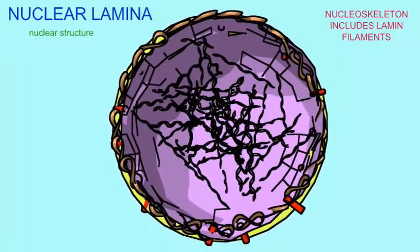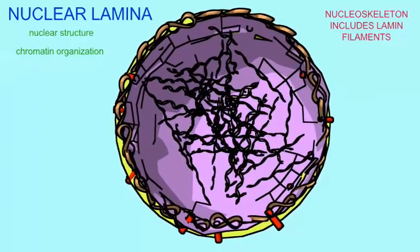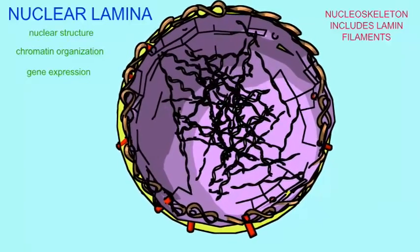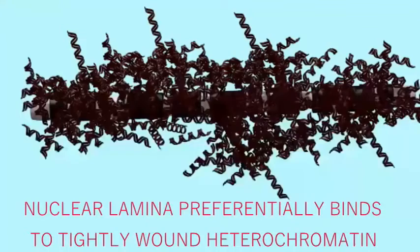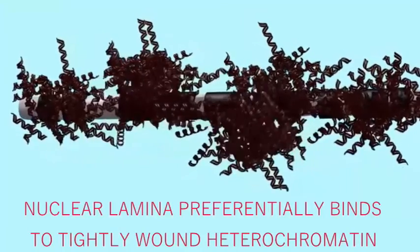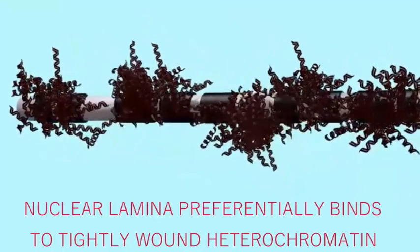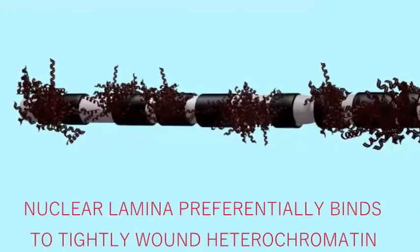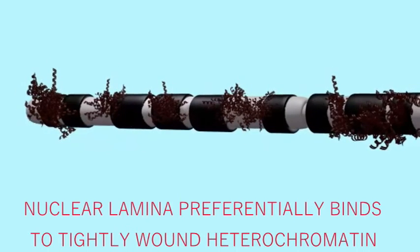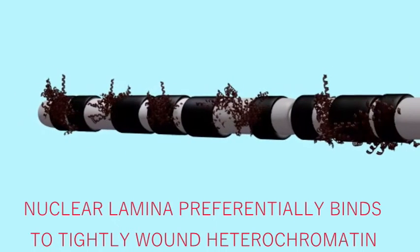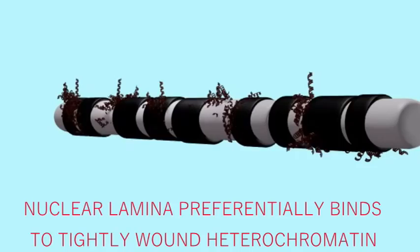These proteins interact with the DNA of chromatin. These lamins interact preferentially with tightly bound chromatin, known as heterochromatin, which indicates regions where the genes are not active and have been silenced, at least temporarily.